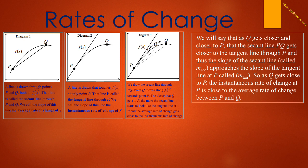So summing up: as Q gets closer and closer to P, the secant line PQ gets closer and closer to the tangent line through P. And so the slope of the secant line, which we will call m-sec, will approach the slope of the tangent line at P, called m-tan. So as Q gets close to P, the instantaneous rate of change at P is very close to the average rate of change between P and Q.